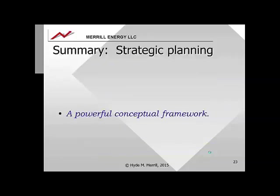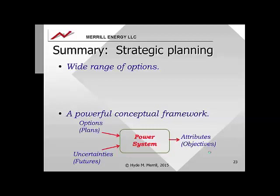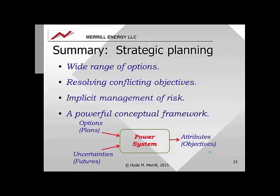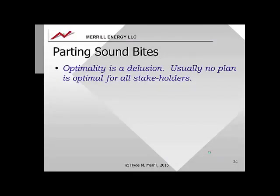In summary, strategic planning is a very powerful conceptual framework and set of methods for selecting among a wide range of options, so as to resolve the conflicting objectives of the various stakeholders in a way to keep all of them reasonably happy, in the presence of risk and uncertainty. First sound bite: optimality is truly a delusion. There is usually no interesting problem with only one objective, and usually there is no plan that is optimal for all stakeholders.